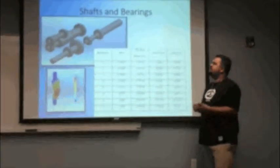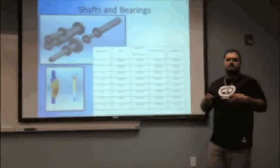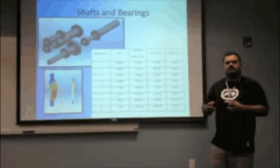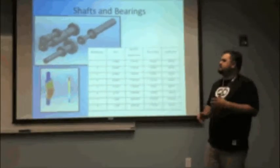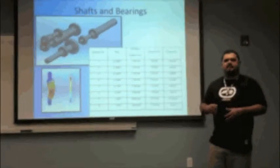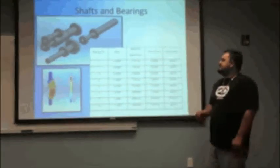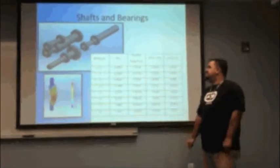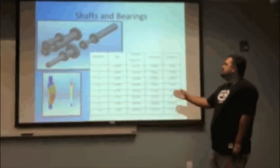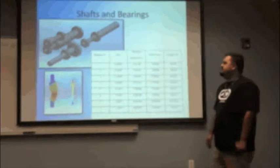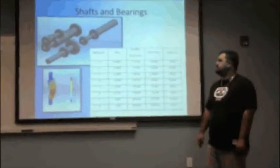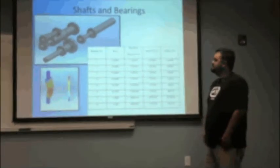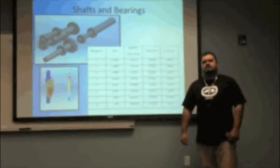So we also did shaft and bearing design. It's important that you support your components with bearings. They take the axial loads that the helical gears provide as well as the radial loads that happens in gear-to-gear contact. We did SolidWorks analysis on the shafts to make sure that they were safe, and we considered eight total bearings, four different bearings. And you can see their locations on the step shafts in the pictures above. I'm going to hand it over to Ray to tell you a little bit more.